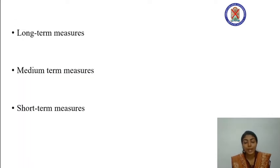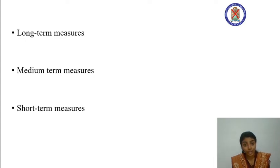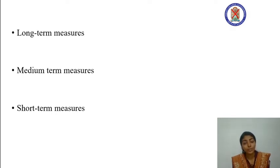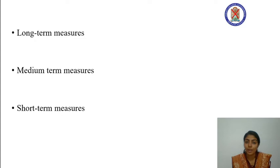The problem of flood management revolves around two measures: structural and non-structural. Having realized that traditional engineering methods alone cannot solve the problem of flood completely, non-structural measures aim at involving people to reduce the damage. So mainly we have three different types of measures: long-term, medium-term, and short-term measures.